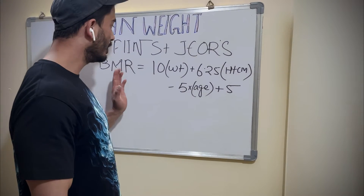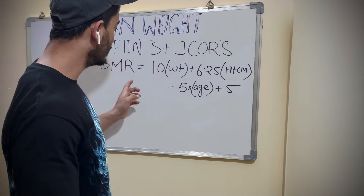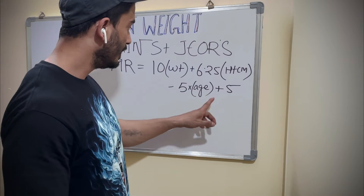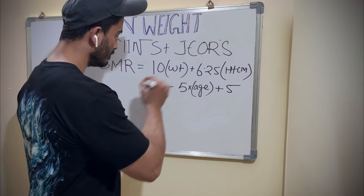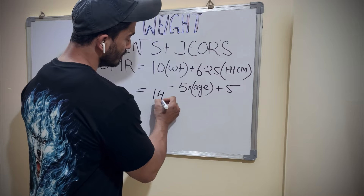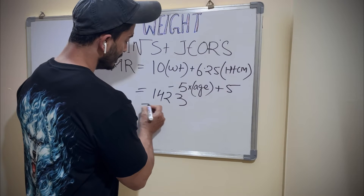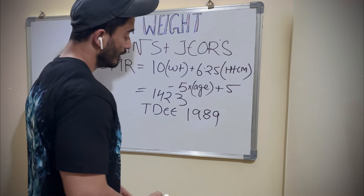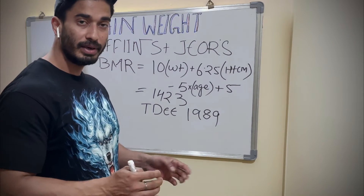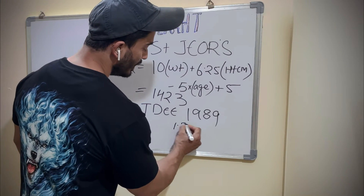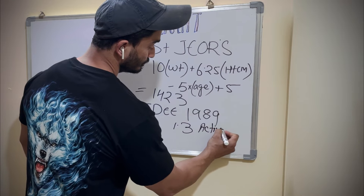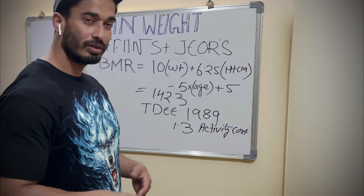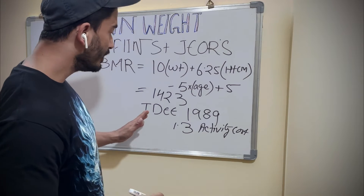First, we need to calculate the BMR. We are using the Mifflin-St Jeor method: 10 × body weight + 6.25 × height in centimeters − 5 × age + 5. Alex's age is 25. If we calculate, the BMR comes to 1423. His TDEE will be 1989 — we are taking 1.3 as his activity factor since he goes to the gym 3 to 4 days a week for 30 to 40 minutes.